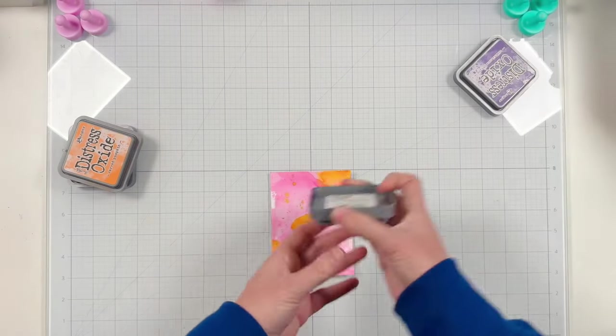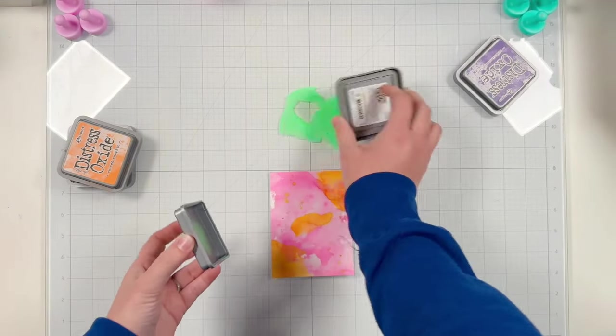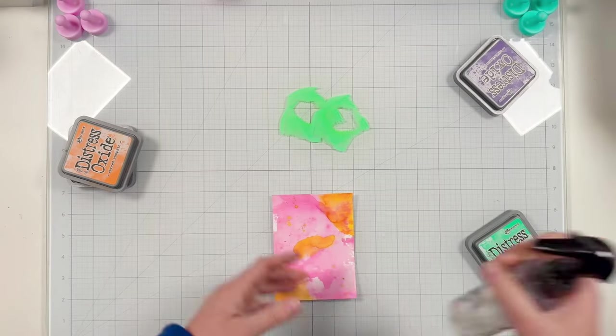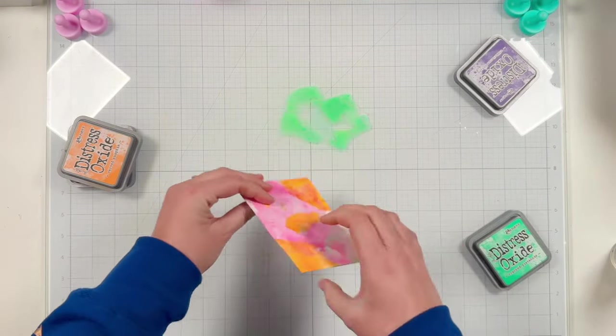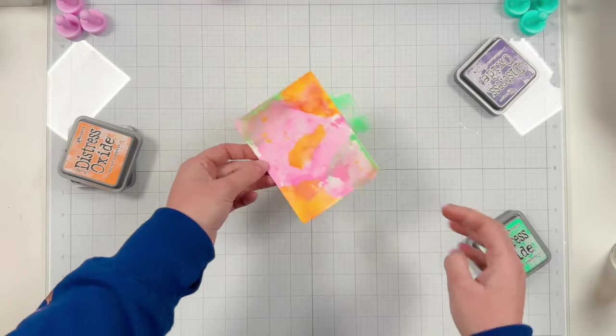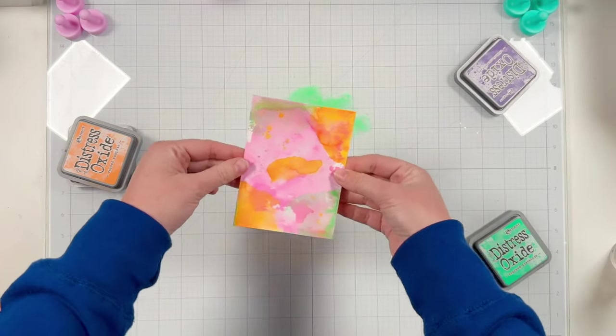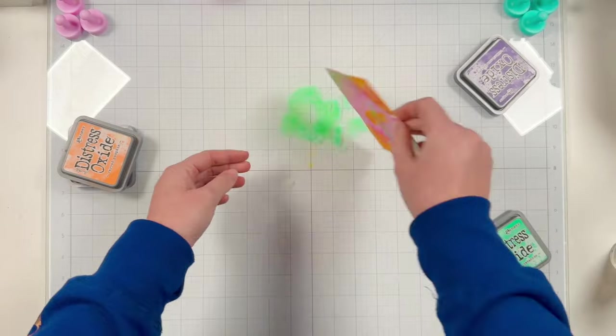Now I'm going to move into cracked pistachio. I'm only going to have a little bit. Like I said, as I started using it I felt like it kind of muddied my background a bit, definitely pink and green create brown, so I didn't do too much.